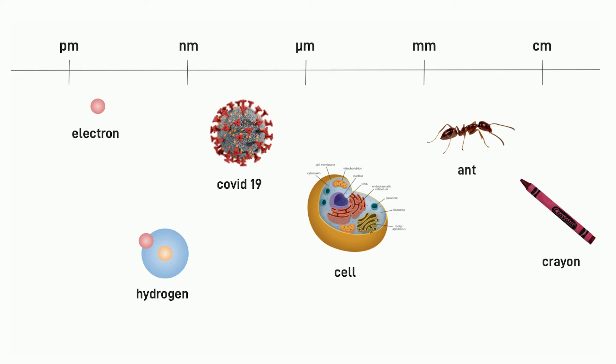And then you start moving into the actual physical items that you can see with your eyes. An ant can be measured in the millimeter scale, and a crayon maybe five to eight centimeters in length.